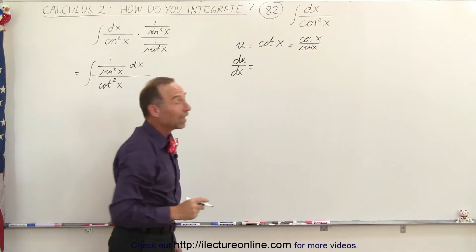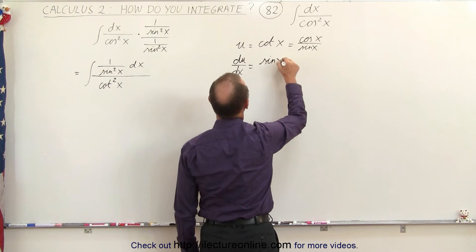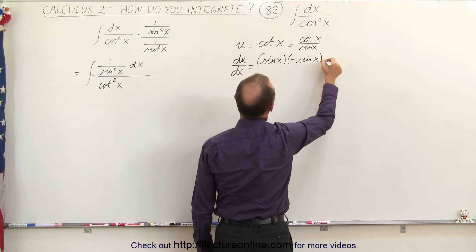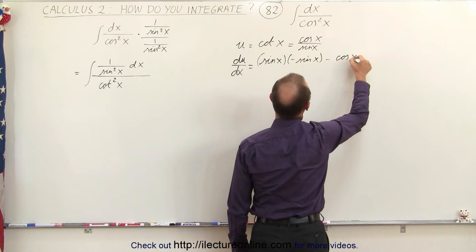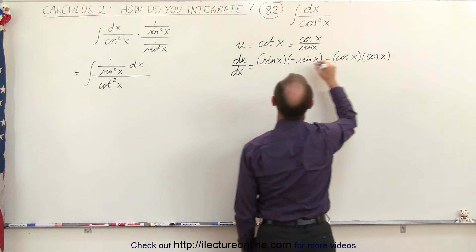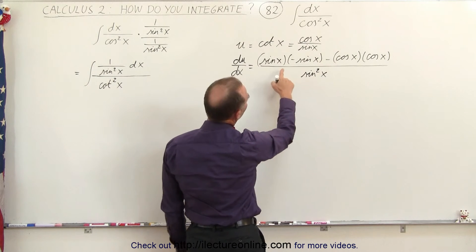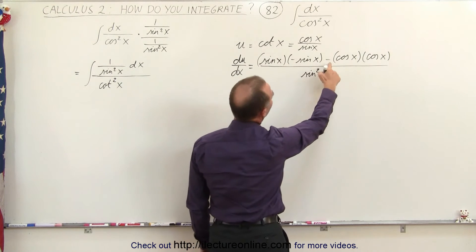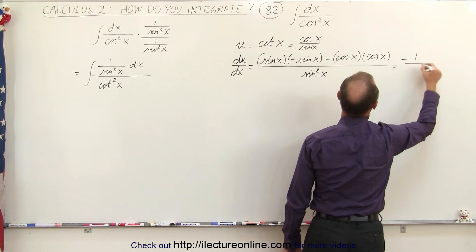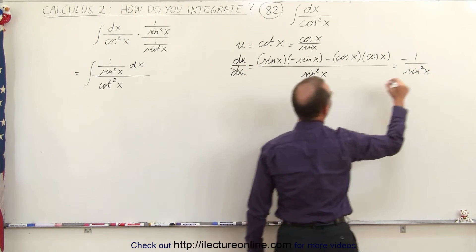So we take the derivative of that using the quotient rule. We get the denominator times the derivative of the numerator, which is going to be a minus sine of x, minus the numerator cosine of x times the derivative of the denominator which is the cosine of x, all divided by the denominator squared, sine squared of x. In the numerator we get minus sine squared of x minus cosine squared of x, which is minus 1 divided by sine squared of x.